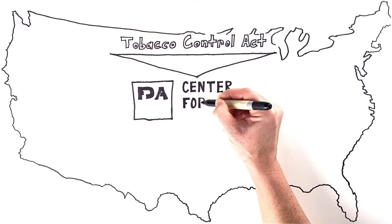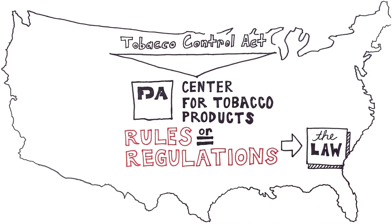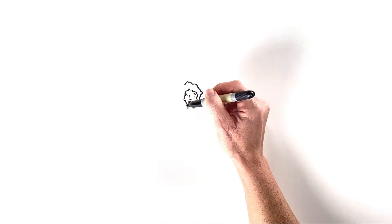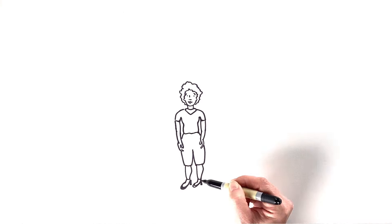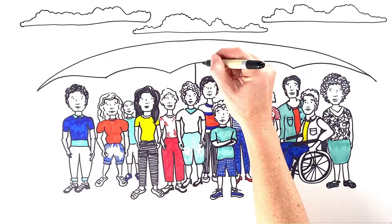Carrying out this law and writing and issuing new rules or regulations that implement the law are important ways that FDA's Center for Tobacco Products, or CTP, helps to protect people in the United States from disease and deaths caused by tobacco product use.